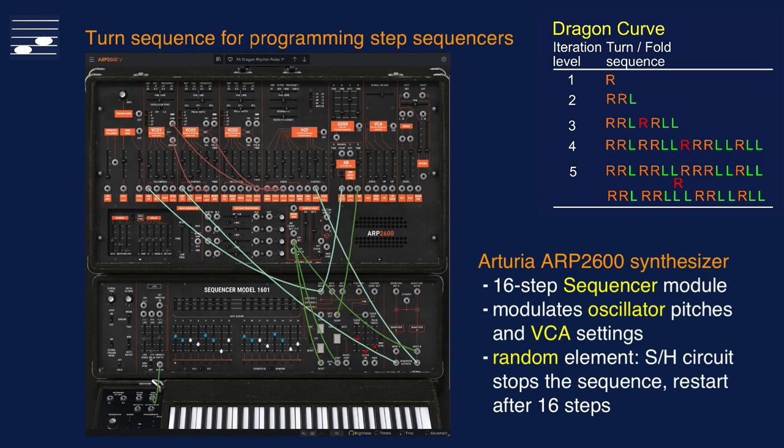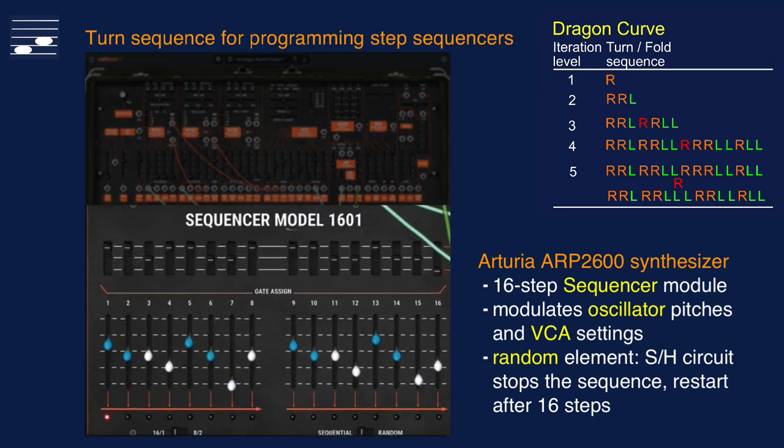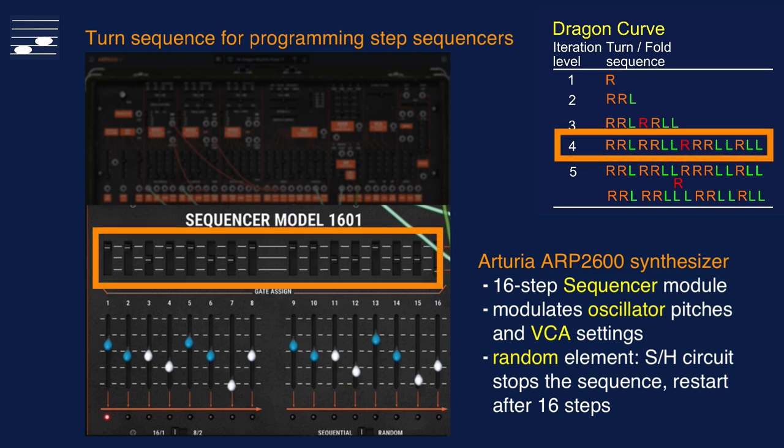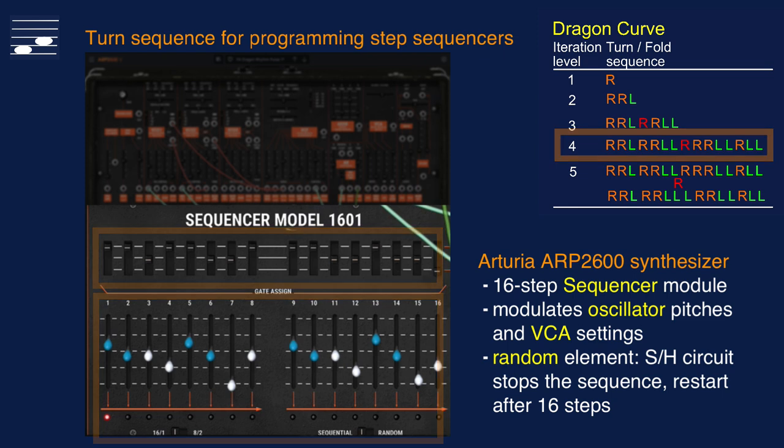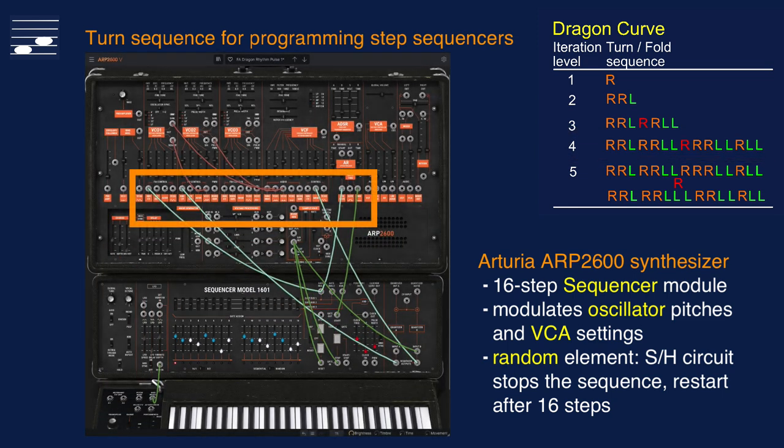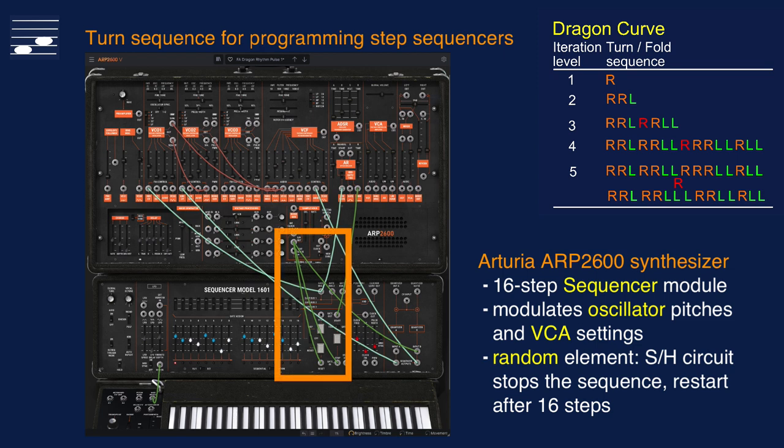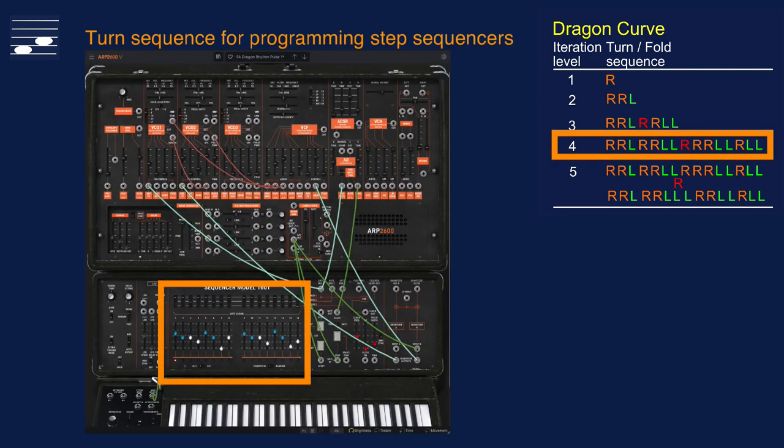The Arturia ARP 2600 software synth also has a 16-step sequencer module, where I applied the 15-step level 4 turn sequence to the sequencer switches and slider settings. These modulate the oscillator pitch values and the VCA. I added a random sequence length feature by connecting a sample hold process output to the sequencer stop switch. Thus, we obtain unpredictable variable length sequences of a pitch modulated noisy sound.